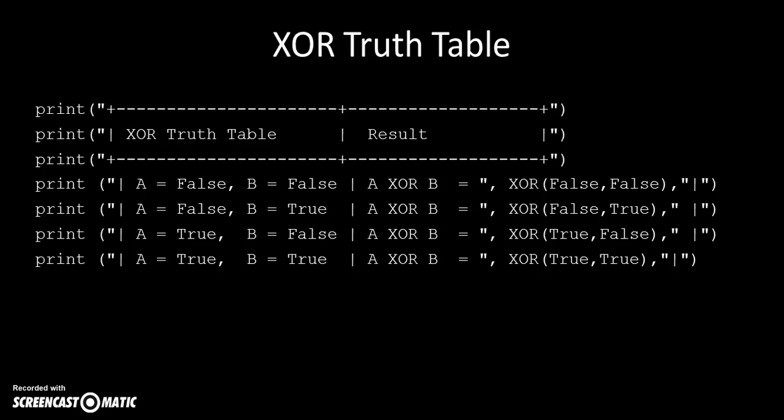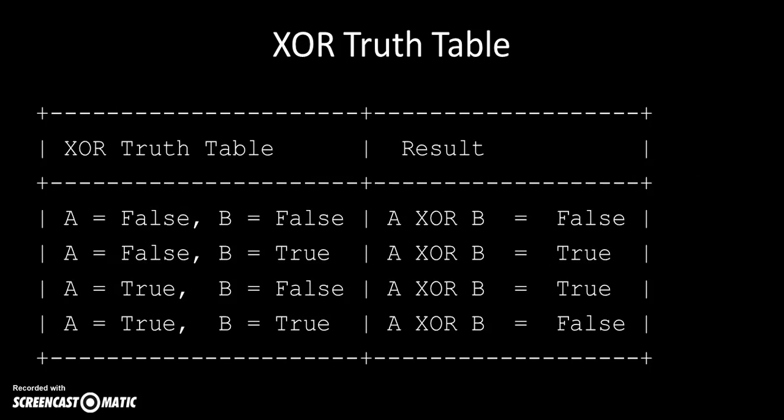For the XOR gate truth table, it's the same look and feel. We print out false/false, false/true, true/false, and true/true, calling the XOR function with those parameters. We include vertical bars, dashes, and plus signs to make it look like a table. As expected: if they're both false, it returns false. If A is false and B is true, it returns true, or the other way around. Whereas if they're both true, because it's an exclusive OR, it returns false.